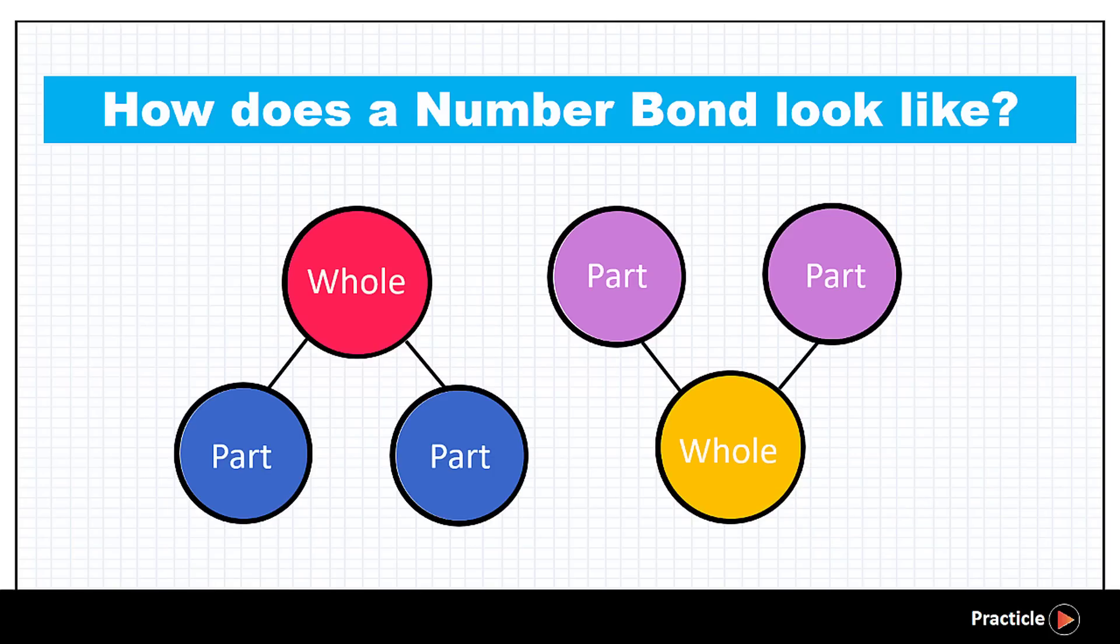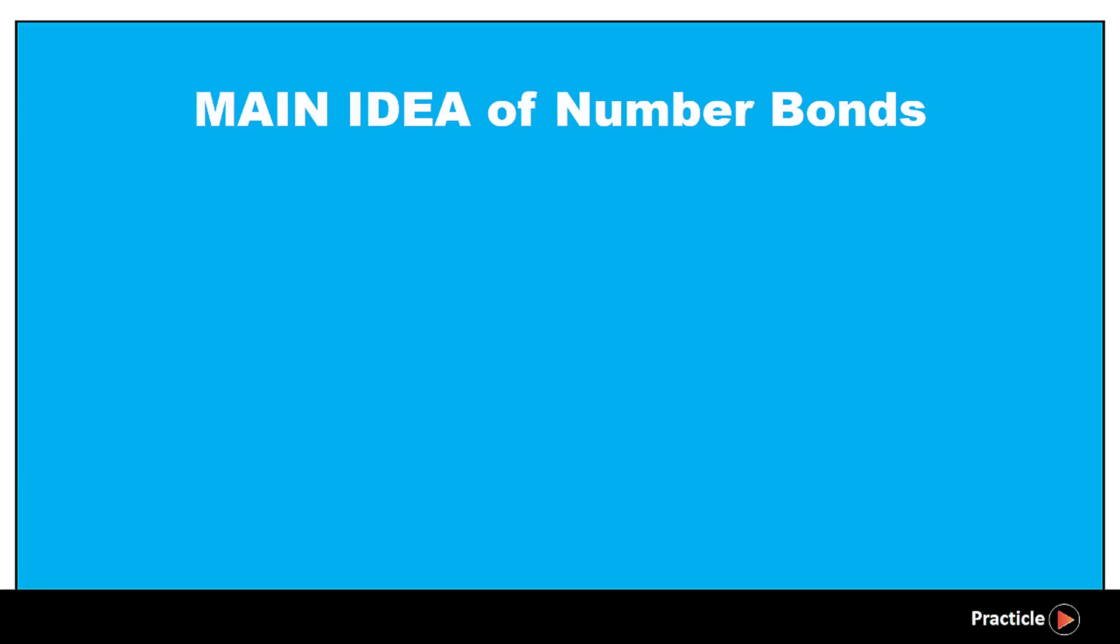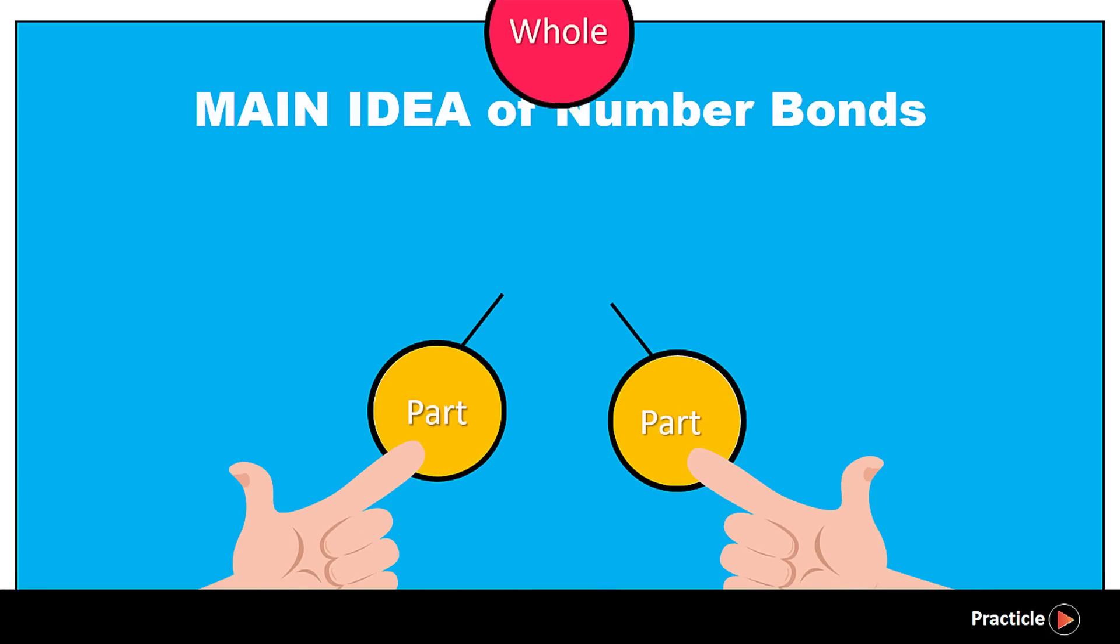So the big idea that you need to know about number bonds is that when we put 2 parts together, you make up a whole. So far so good? Now that we have learnt what a number bond is, let's look at an example to help us understand how it works.